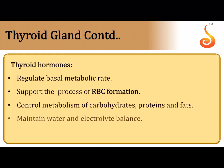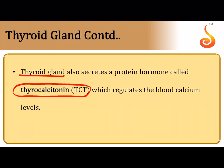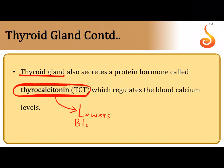Thyroid hormones regulate the basal metabolic rate, support RBC formation, control the metabolism of carbohydrates, proteins and fats, and maintain water and electrolyte balance. In addition to follicle cells, the thyroid gland contains parafollicular cells (C cells) that secrete thyrocalcitonin, which plays an important role in regulating blood calcium level by lowering it — making it a hypocalcemic hormone.